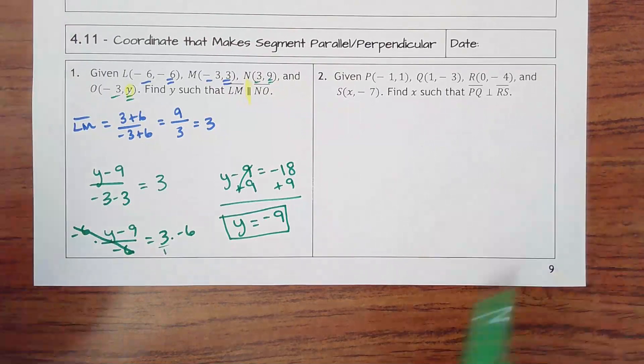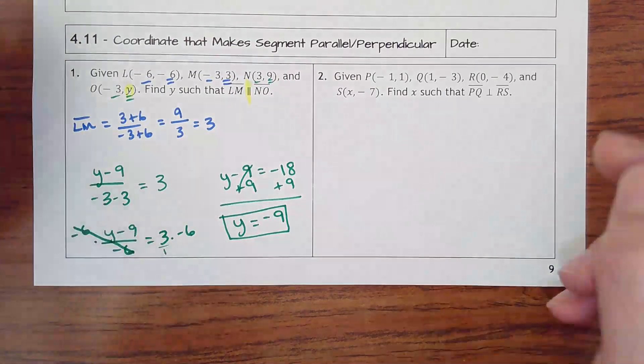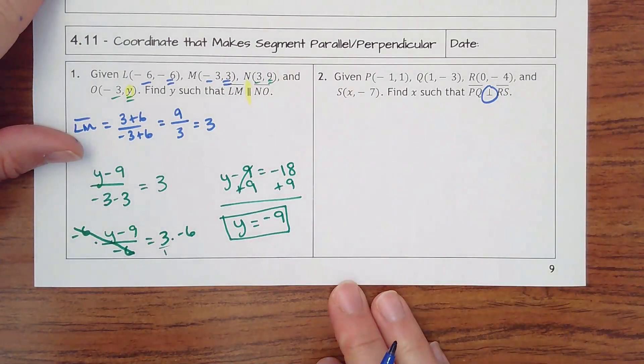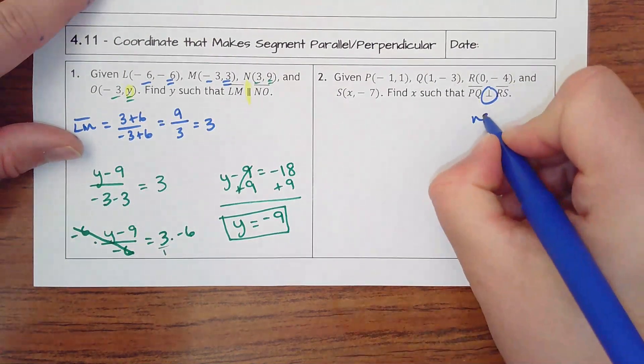Let's try one more. Remember, this time it's the same thing except for we want perpendicular. So remember, I'm going to have to do negative reciprocal slopes.